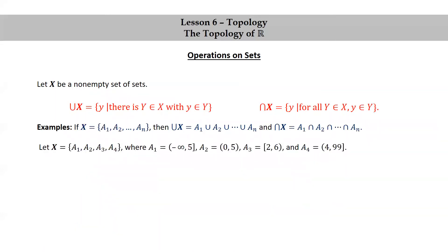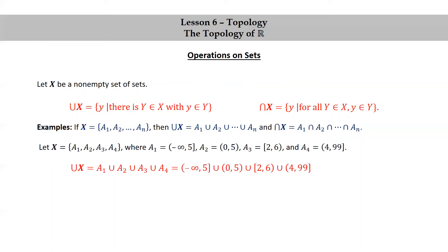Let's take a look at a very specific example of a union and intersection of finitely many sets — we'll do four. So we'll let X be the set consisting of A1, A2, A3, A4. We'll make them intervals: A1 is the closed interval negative infinity to 5, A2 is the open interval 0 to 5, A3 is the half-open interval 2 to 6, and A4 is the half-open interval 4 to 99. Let's compute union X first.